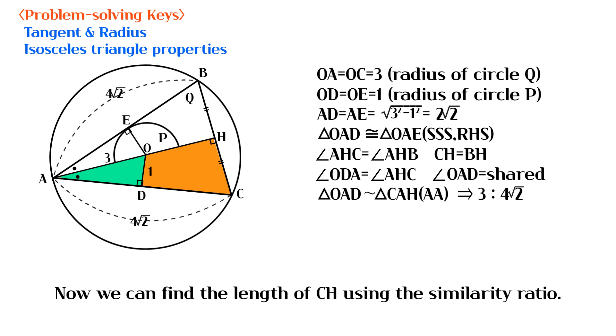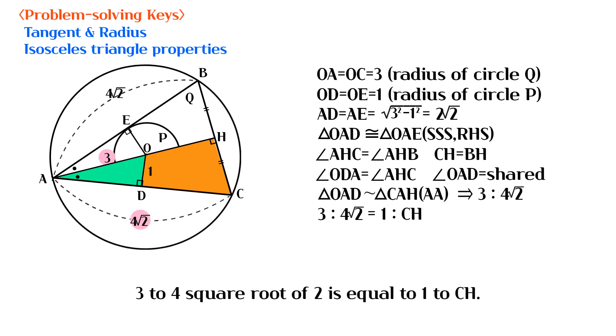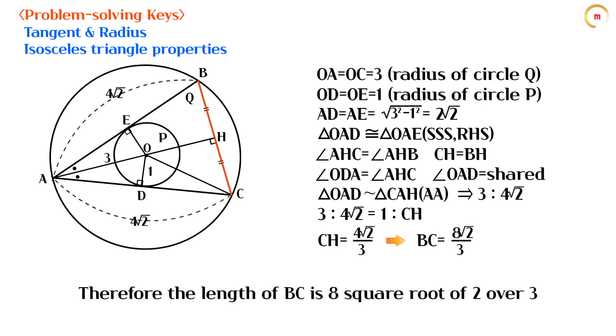Now we can find the length of CH using the similarity ratio. 3 to 4 square root of 2 is equal to 1 to CH. Therefore the length of BC is 8 square root of 2 over 3.